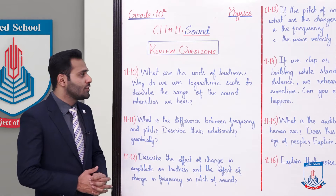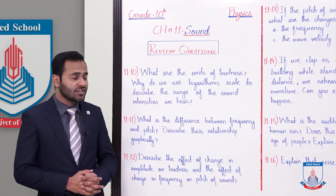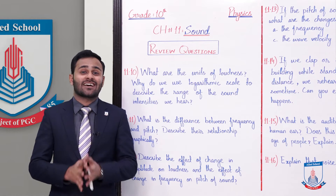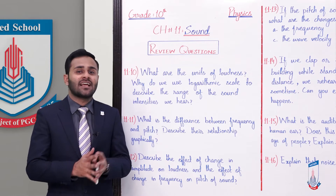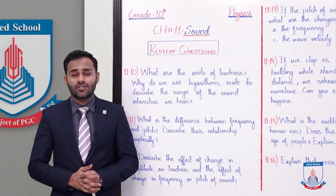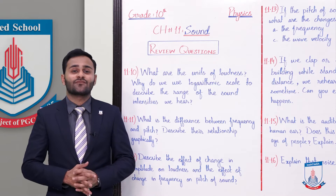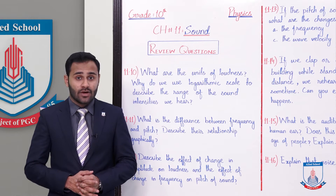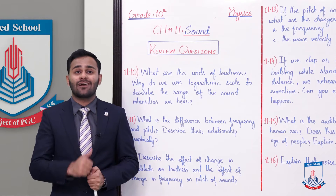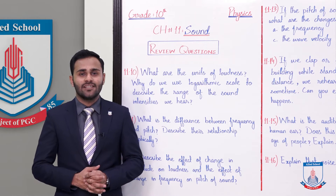And why do we use logarithmic scale to describe the range of the sound intensities we hear? Sound intensities ko describe karne ke liye hum logarithmic scale ka istamal kyun karte hain - because intensities ki jo value hoti hai wo bohat zyada small hoti hai, that starts from 10 to the power minus 12. So that's why us ko further solve karne ke liye hum uska log lete hain taake hum itni small values ko easily solve kar sakein.